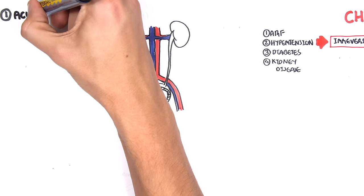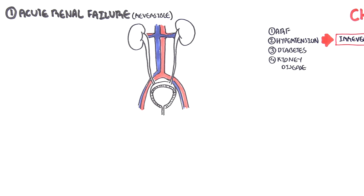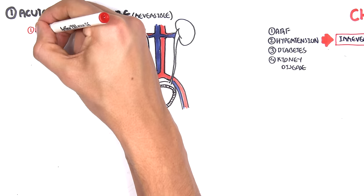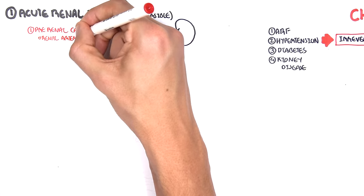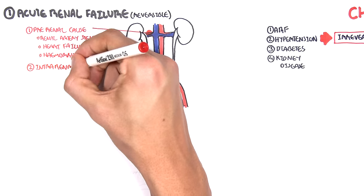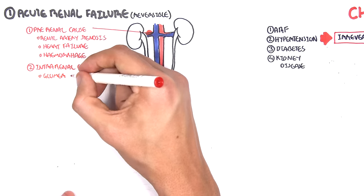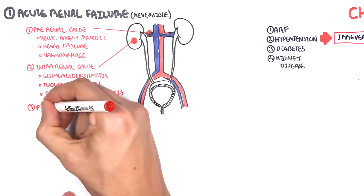Let's begin by looking at acute kidney failure, or acute renal failure — they are the same thing. Acute kidney failure, unlike chronic kidney failure, is reversible. One way to categorize its causes is into pre-renal, intra-renal, and post-renal causes. Pre-renal causes include renal artery stenosis, heart failure, and hemorrhage. Intra-renal causes include glomerulonephritis, tubular necrosis, and interstitial nephritis.